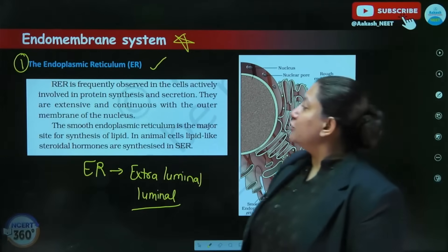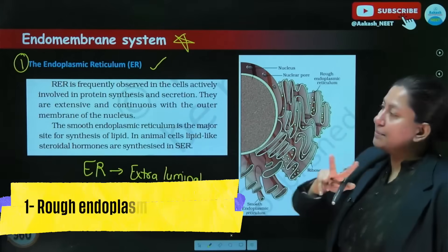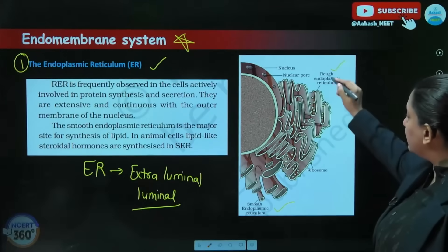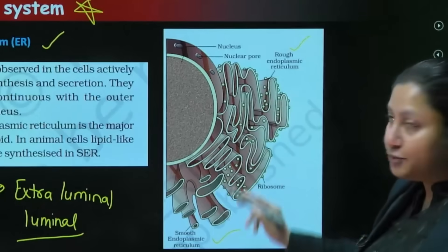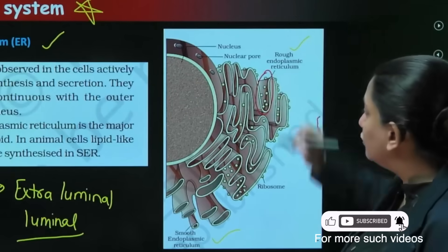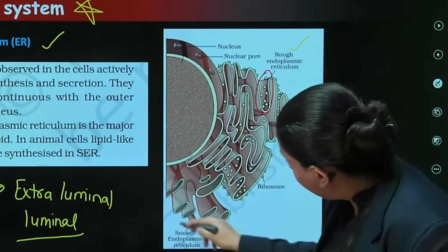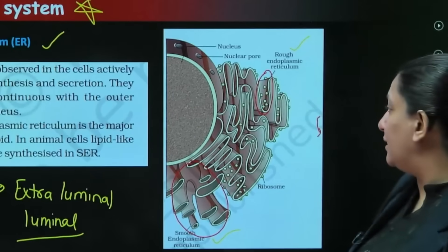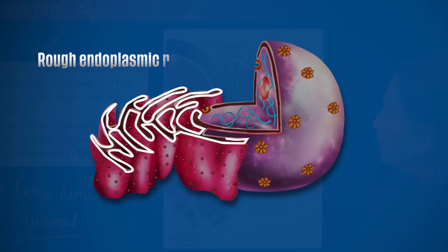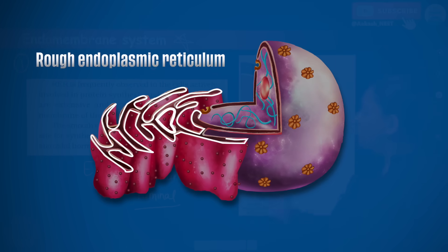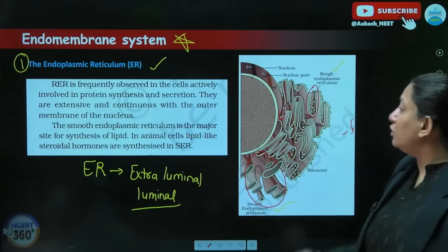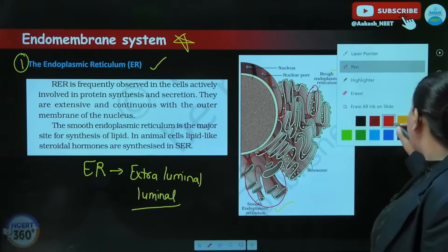When we talk about ER, there are two types: one is RER and another is SER. From the diagram given in NCERT itself, you can clearly see the difference between the two. The very first difference is the presence of ribosomes — these granular structures — on the RER, which are entirely absent in the smooth endoplasmic reticulum region. You can also see that outside the nuclear membrane, it is continuous with the RER.